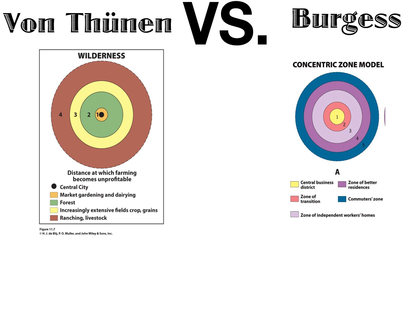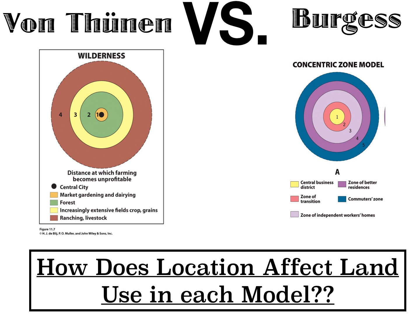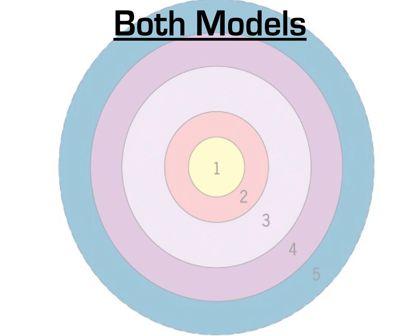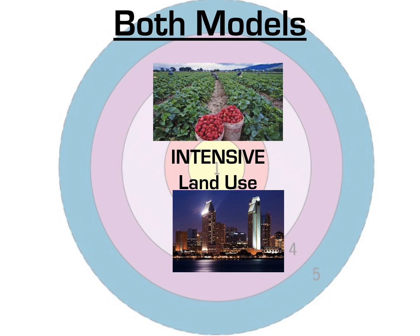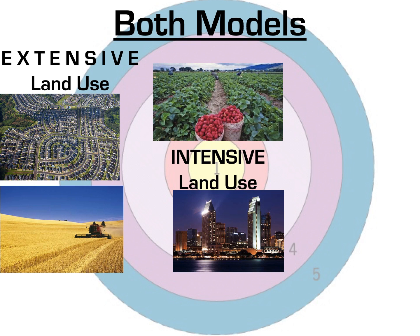In both models, location relative to the center determines land use. Near the center — the CBD in Burgess or the market city in von Thünen — we have intensive land use. In agriculture, intensive land use means planting things like strawberries; in Burgess, it means high-rise buildings. In the periphery of both models, we have extensive land use: suburban homes with large plots of land in Burgess, and grain crops in von Thünen.